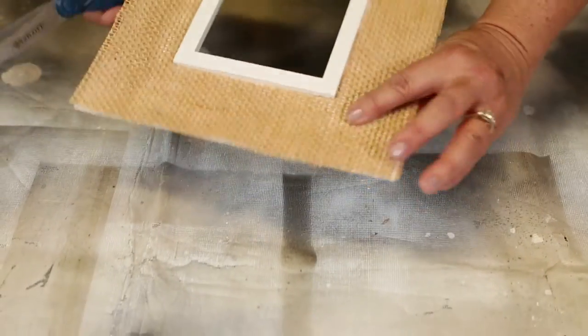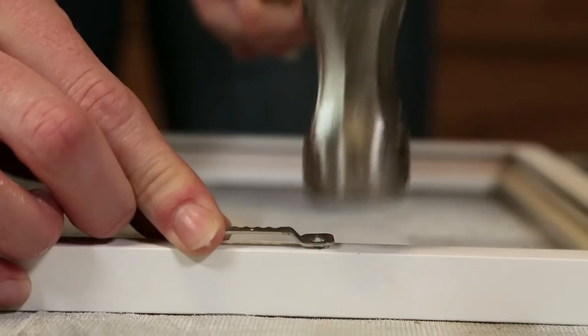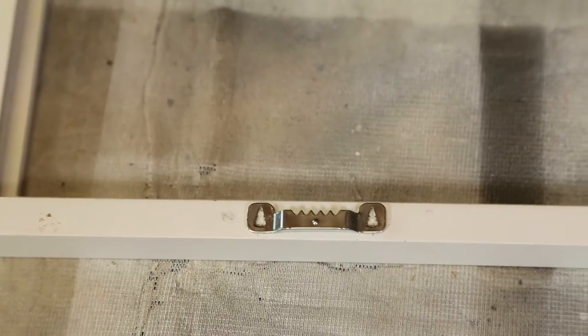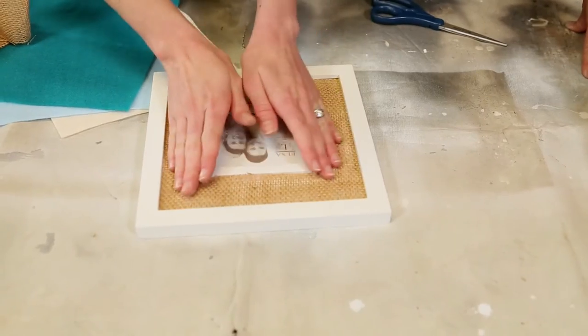Since these frames are also gifts, we want them to be versatile, to be able to stand on a piece of furniture as well as hang on the wall. So we're adding a picture hanger on the back. Now we're ready to add our accent flowers.